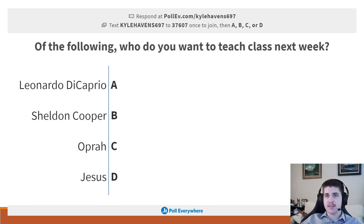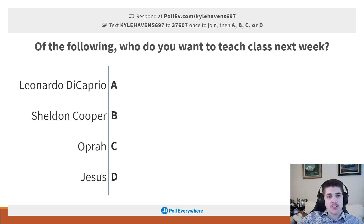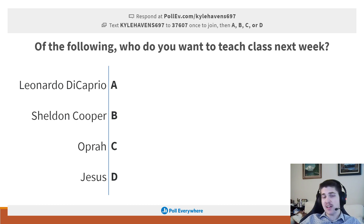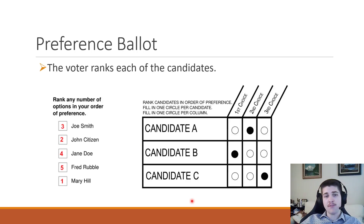The math behind single-choice ballots is not that complicated. Say we have 50 students in class all voting — Leonardo gets 20 votes, Sheldon gets 15, Oprah gets 10, and so on. If everyone's getting a single vote, we just count up the number of votes and that person is the winner. I think when most people think of elections, that's the simplistic nature of it. But that's not the end of the story — which is what I'm getting to next.